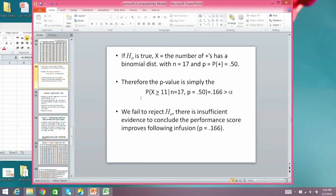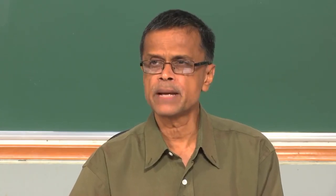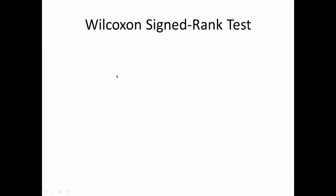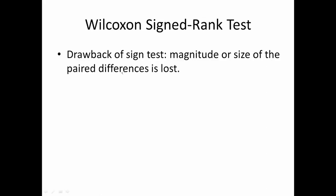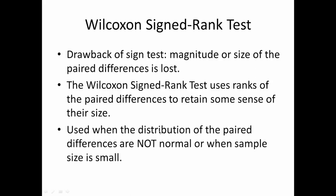The sign test has a significant drawback: it does not consider the magnitude of the difference, only looking at the signs plus or minus. To overcome this, we have the Wilcoxon signed rank test, which considers both the sign change and the magnitude by using a ranking procedure. We generally use it when data are not normally distributed and the response is ordinal, like the previous case.